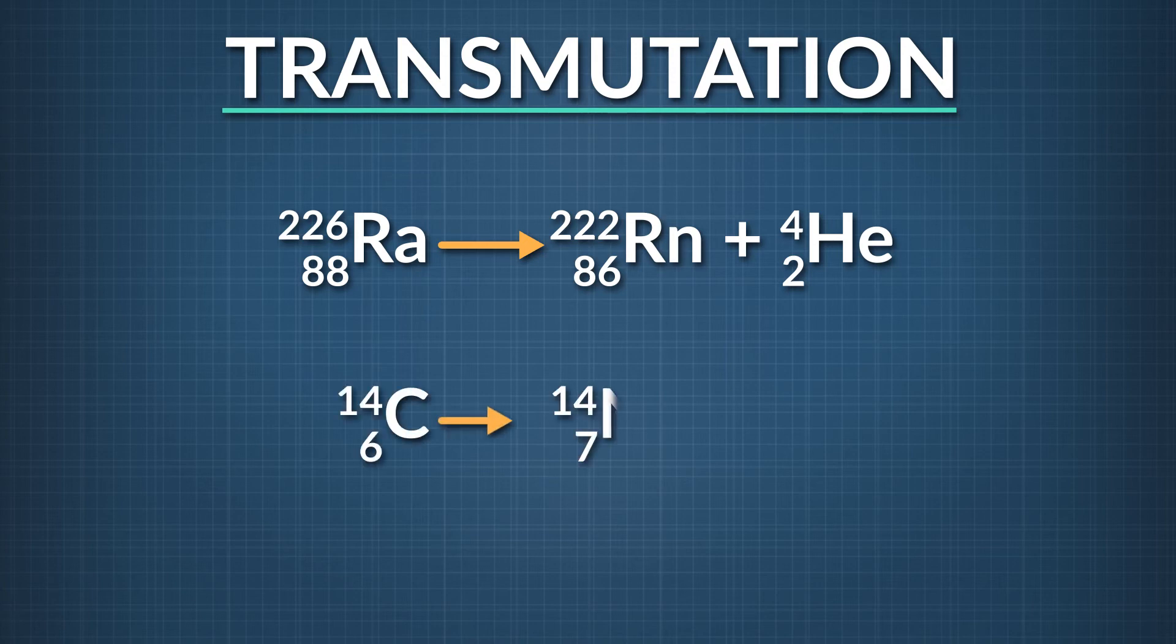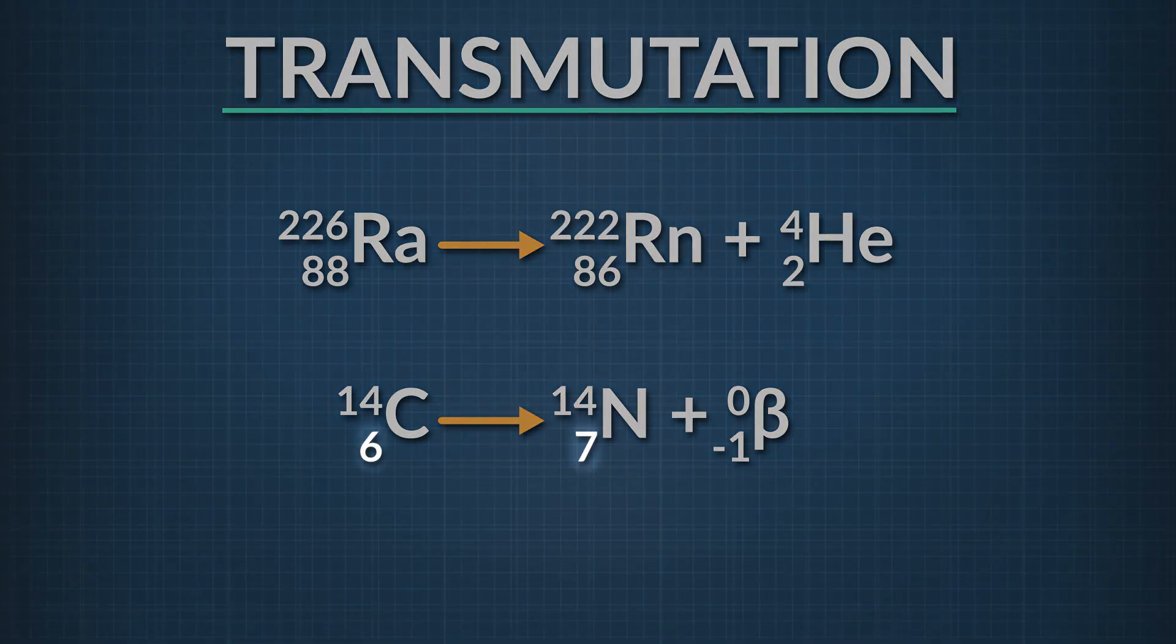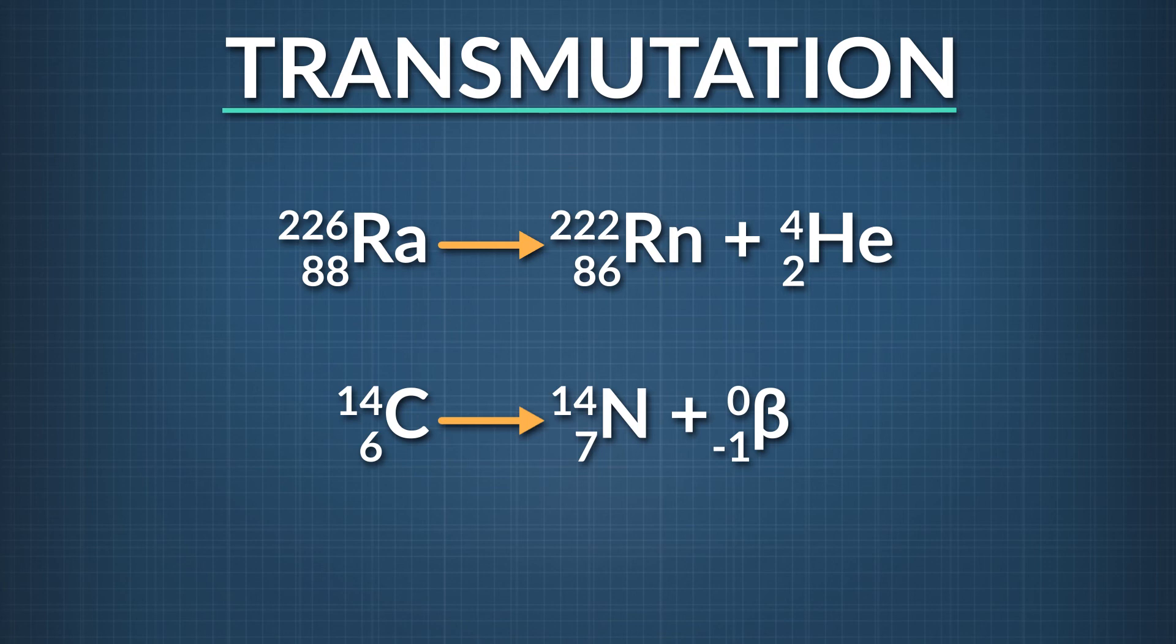In the second example, a transmutation occurs involving beta minus radiation. Here, a neutron changes into a proton and emits an electron. Even though the mass number doesn't change, the atomic number increases by 1. In this example, when a beta particle is released, carbon-14 becomes nitrogen-14.